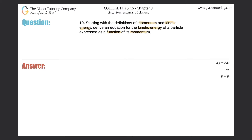All right, so let's recall what the equation for kinetic energy is. Kinetic energy is equal to one-half multiplied by the mass of the object multiplied by its velocity squared. And what's the formula for momentum? The momentum of an object is equal to the mass of that object multiplied by its velocity.